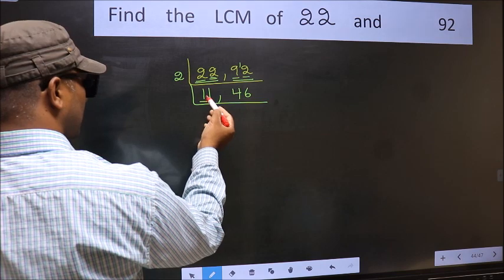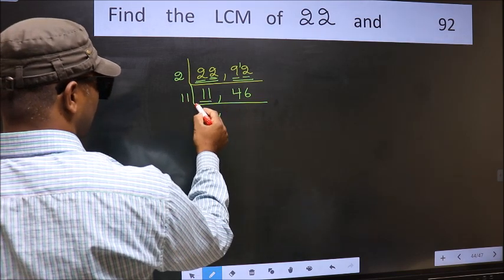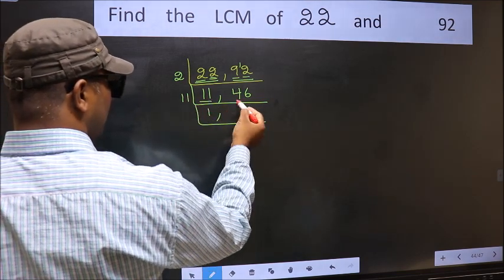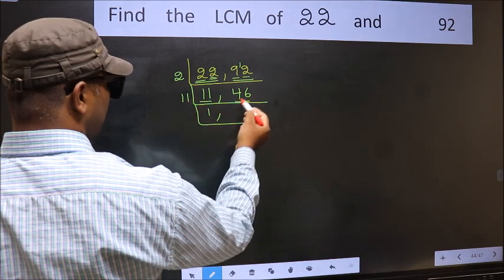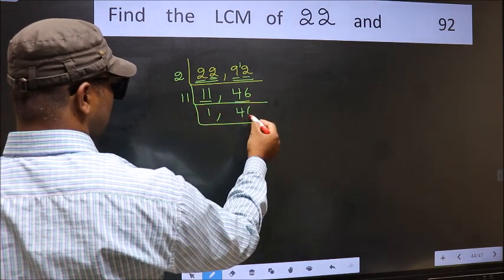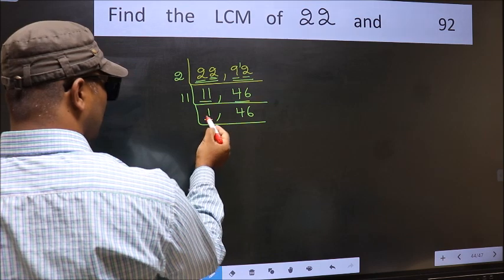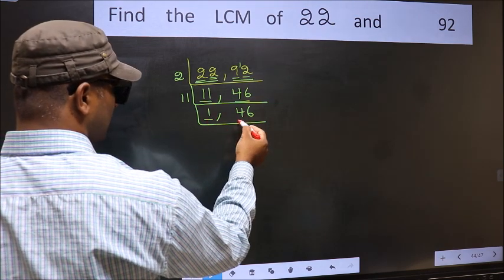Now here we have 11. 11 is a prime number, so 11 once is 11. The other number 46 is not divisible by 11, so we write it down as it is. We got 1 here, so focus on the other number 46.